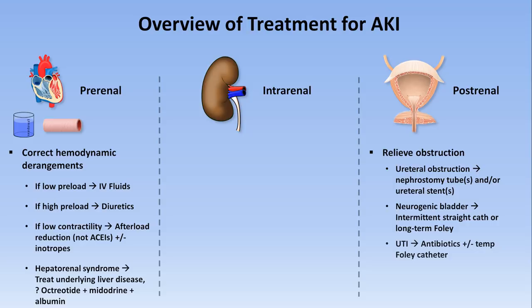For patients with AKI due to lower UTIs and subsequent urethral obstruction from inflammation and debris, usually antibiotics alone are sufficient, but a temporary Foley may be necessary in some patients. If a medication is causing urinary retention, simply stop it. For obstruction caused by BPH, alpha blockers should be started, but a temporary Foley catheter is frequently used for several weeks to give sufficient time for those meds to work and for renal recovery.